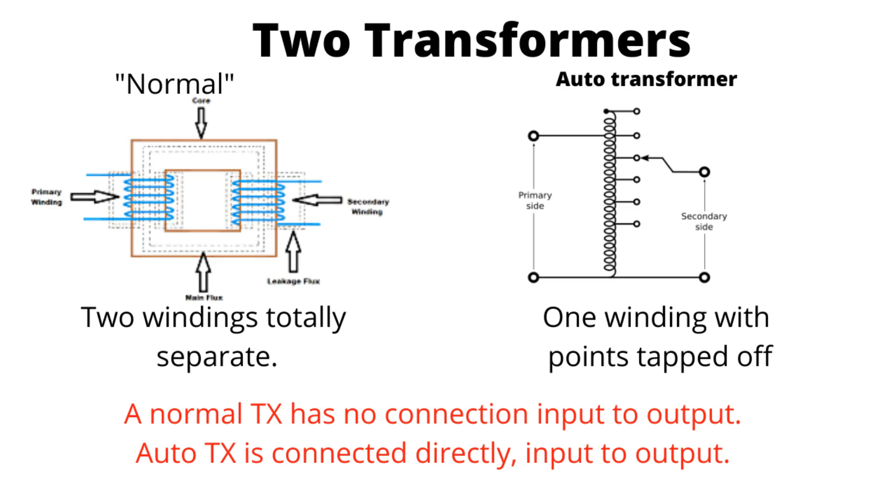To know about transformers is they are made up of basically two lots of wire unless it's an auto transformer. We'll cover that in a minute. So you've got a set of wire that goes around a lump of metal and then you've got another set of wire that runs away from that metal.